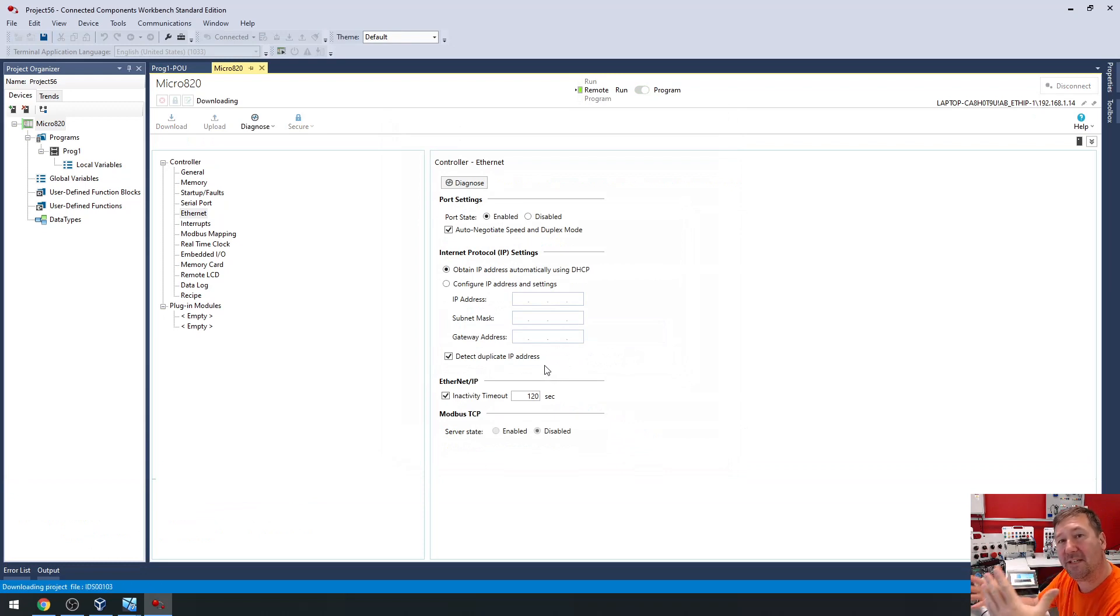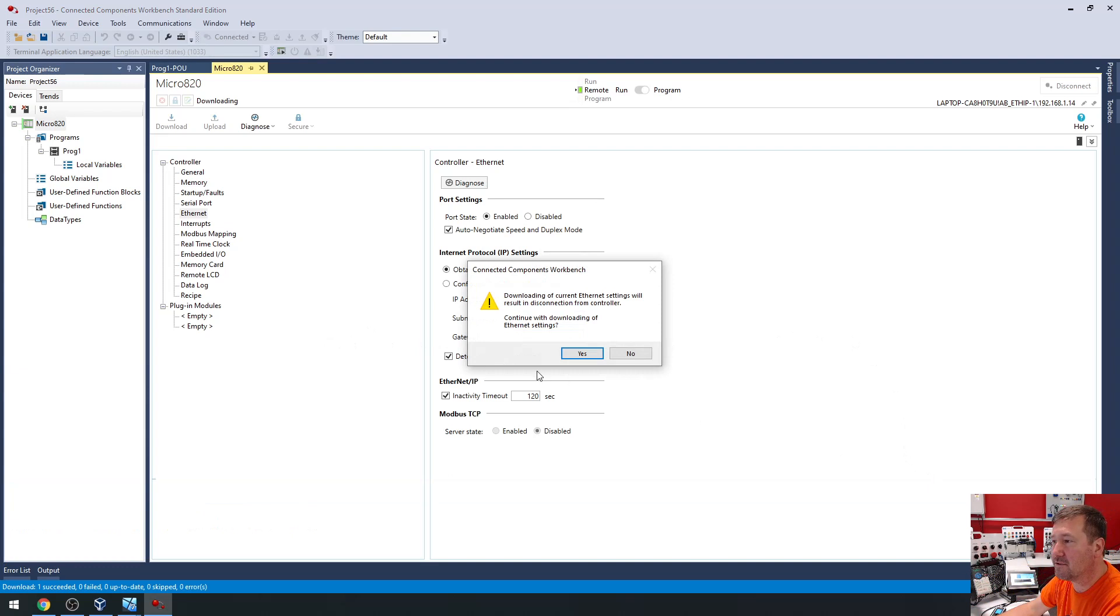It's going to ask to download with project values, and this is the part that's going to trip you up. Typically the next button is 'do you want to put it in and run,' so I've got my finger on the trigger ready to hit the yes button. But if we look at this, it actually says 'downloading current Ethernet settings will result in disconnection of controller, continue with downloading Ethernet settings.' But in my mind I'm just like, yep, I need to hit the run button, so I click yes.